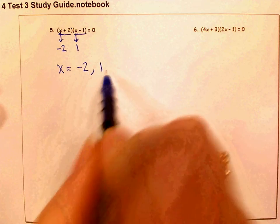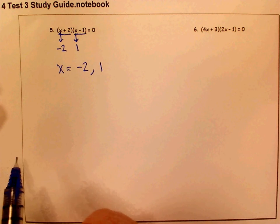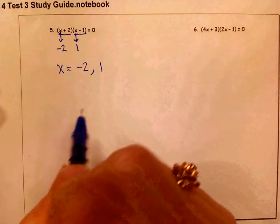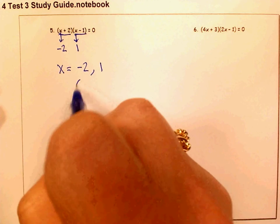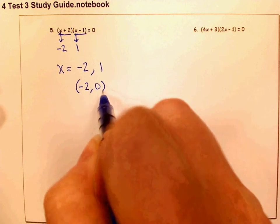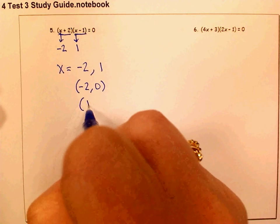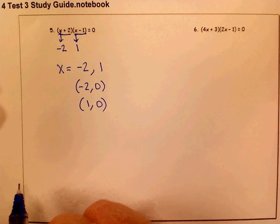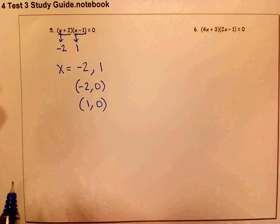Remember not to put those numbers in parentheses. That's not a single point. Those are actually two different points. Those are x-intercepts. So if you wanted to write them as points, you would write negative 2, zero and 1, zero as your solutions, but not that as a single point.